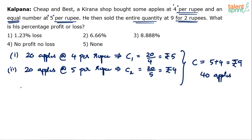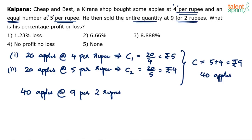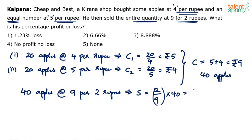Now let's find out the selling price. He sold the entire quantity at 9 apples for 2 rupees. Total apples are 40 and these were sold at 9 per 2 rupees. That means you get 9 apples if you pay 2 rupees. The selling price per apple is 2 by 9. So for 40 apples the total selling price is 2 into 40 by 9, which is 80 by 9.